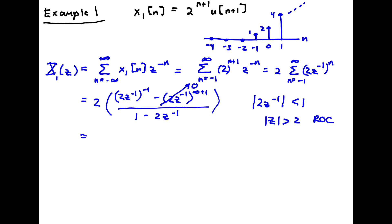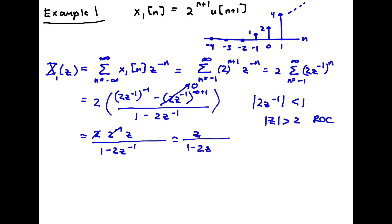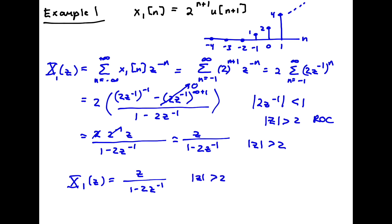So we're left with 2 times 2^(-1) times z^(+1) over 1 minus 2z^(-1). Since 2 times its inverse is just 1, we end up with z over 1 minus 2z^(-1). So our final answer is x1(z) = z / (1 - 2z^(-1)), with |z| greater than 2.